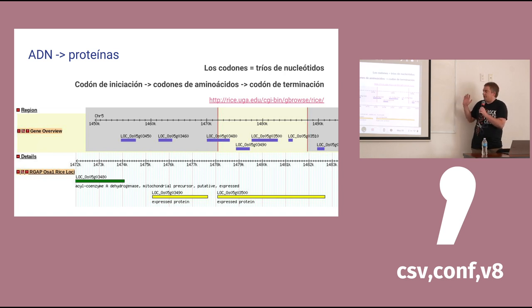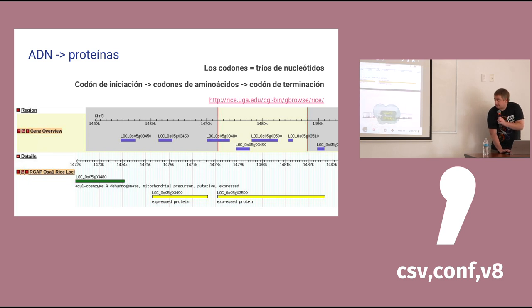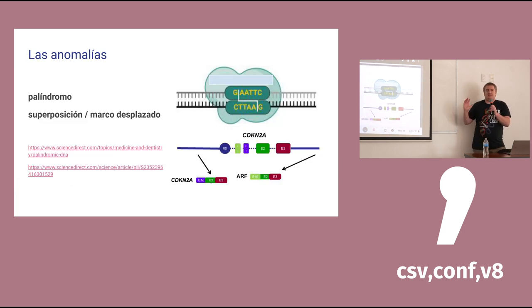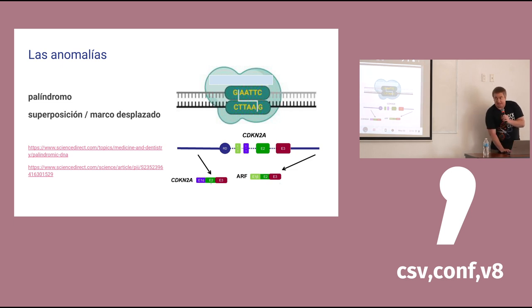Inside those genes, every three pairs is called a codon. There's a start codon, then each codon after that represents an amino acid that's going to be put into the protein, and then there's a stop codon. Since we're programmers, you might think it's going to be a neat programming language, but actually there are all sorts of strange things in your own DNA — including palindromes and overlapping genes that are just frame-shifted from each other. Somehow that structure allows these genes to work just based on where the copying starts.